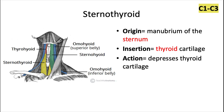And then we have the sternothyroid muscle. This one originates from the manubrium of the sternum at the center of the chest and inserts into the thyroid cartilage. The action is to depress the thyroid cartilage, being below the thyroid gland.